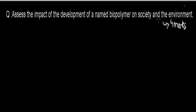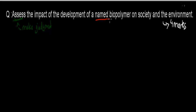When you look at this question, let's look at the actual verb — it says 'assess.' What assess means is make a judgment. In this case, make a judgment on the impact of the development of a named biopolymer on society and the environment. You're also going to need a named biopolymer. We're going to go over PLA, but you could have chosen a different one. You need to assess the impact on society and the environment — make sure you've covered how society is affected and how the environment is affected.